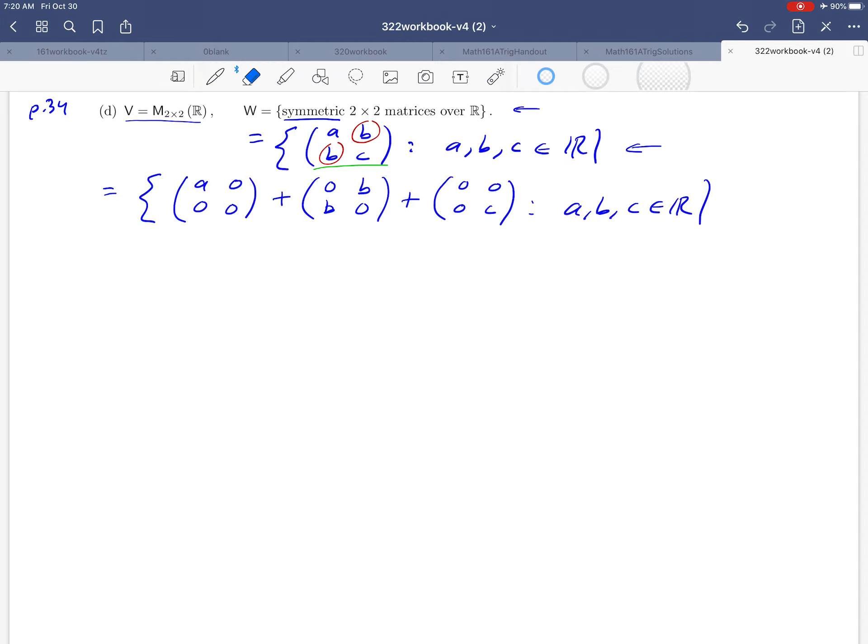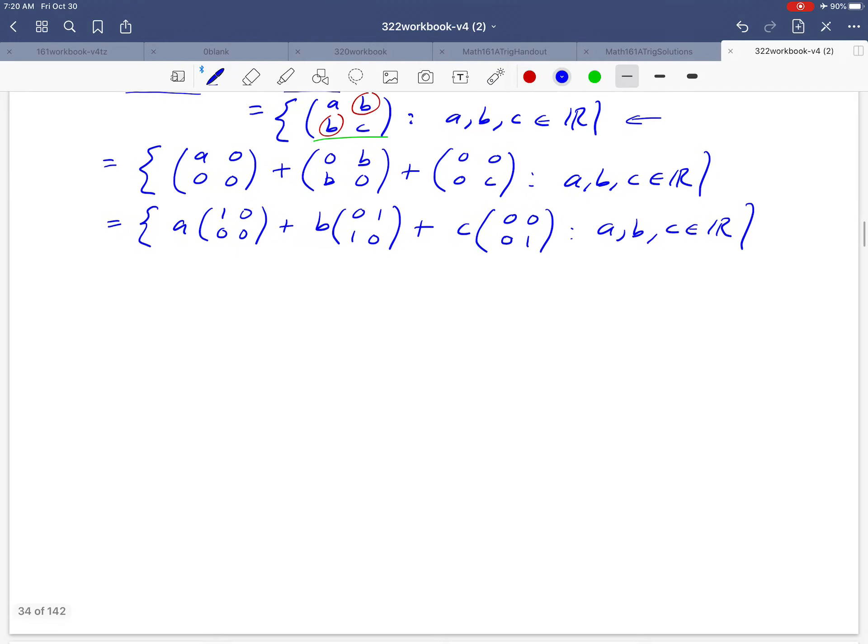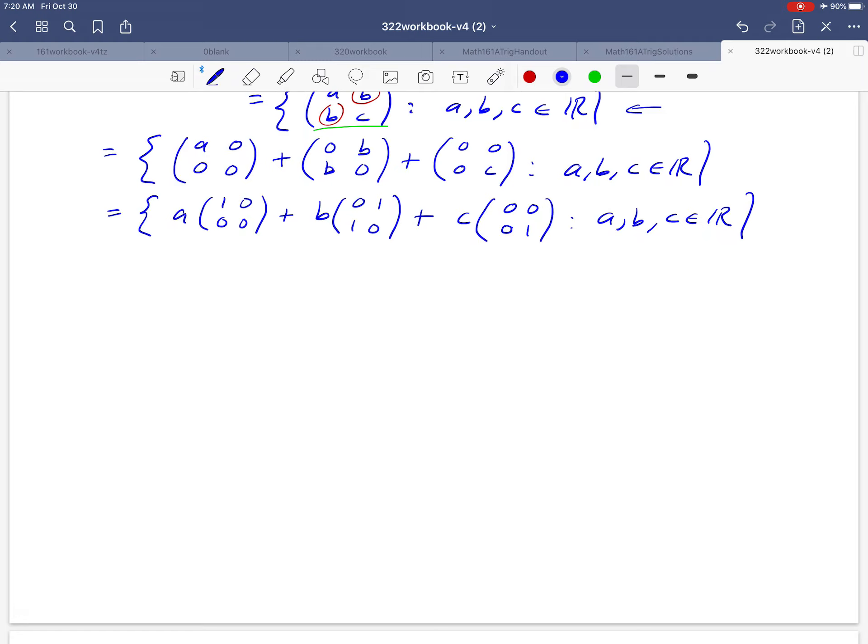And then notice we can rewrite this again as the set of all A times (1, 0, 0, 0) plus B times (0, 1, 1, 0) plus C times (0, 0, 0, 1). We're just factoring out those parameters, basically. And we notice that by doing that, we've essentially written W as the span of these three matrices that I'm underlining. So that is equal to the span of beta, where beta is just the set containing those three matrices.